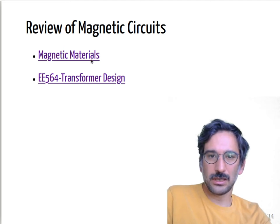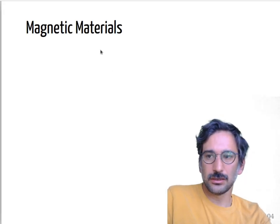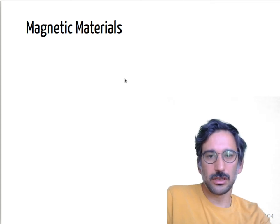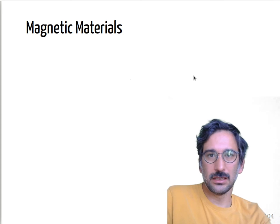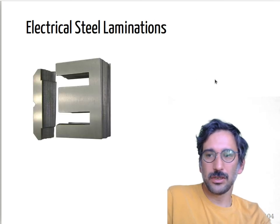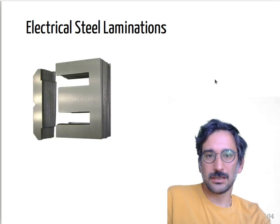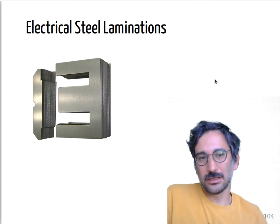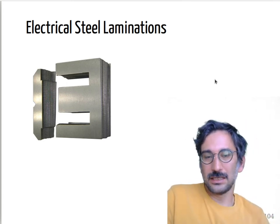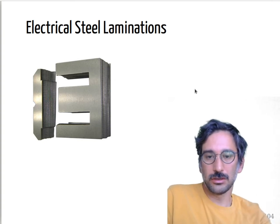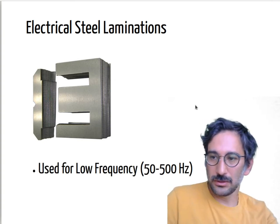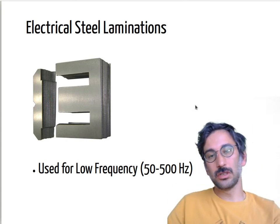Let's start with magnetic materials first. If you remember from the third year, for normal 50 Hz grid-connected transformers we mostly use electrical steel laminations — thin laminations made of electrical steel to reduce core losses and eddy current losses.